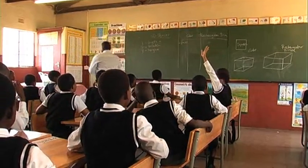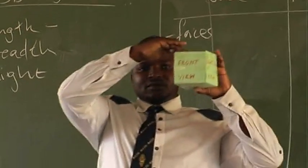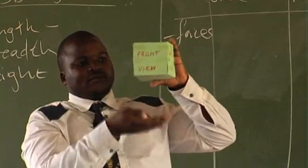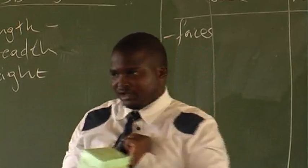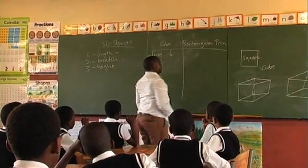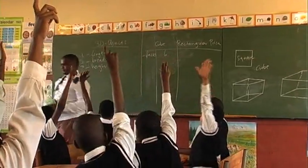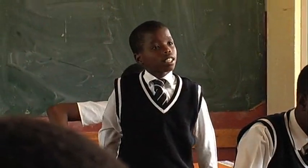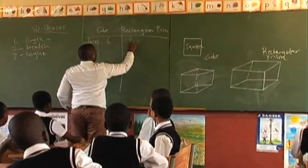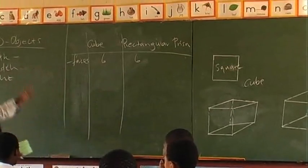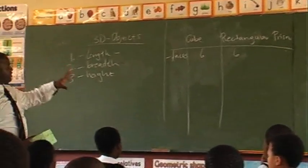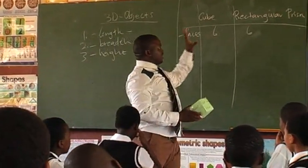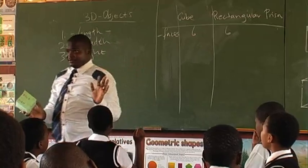Let us count the faces here: 1, 2, 3, 4, 5, 6. Yes, there are 6 faces. Then the rectangular prism — how many faces are there? There are 6 faces in the rectangular prism. So what does this tell us? It tells us that the faces of the cube and the faces of the rectangular prism are the same.